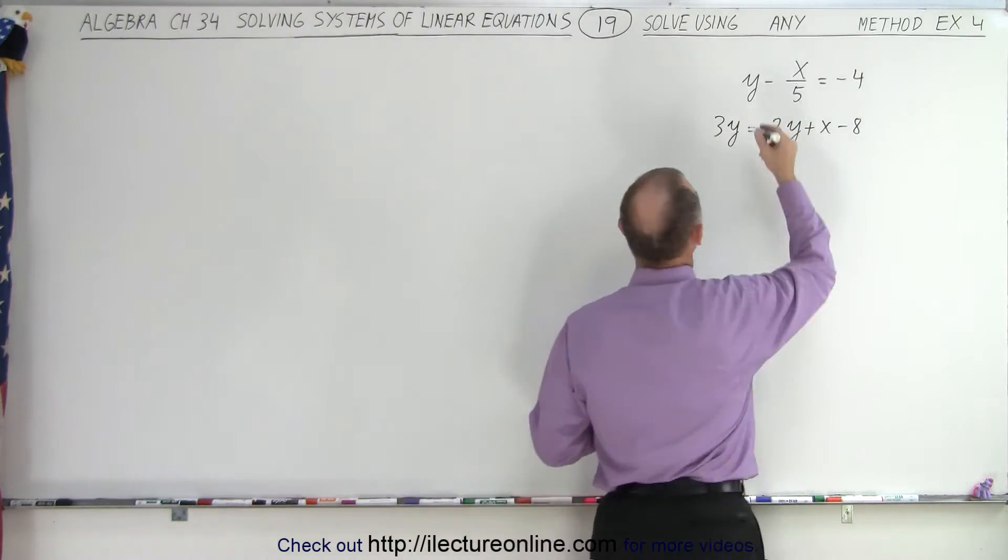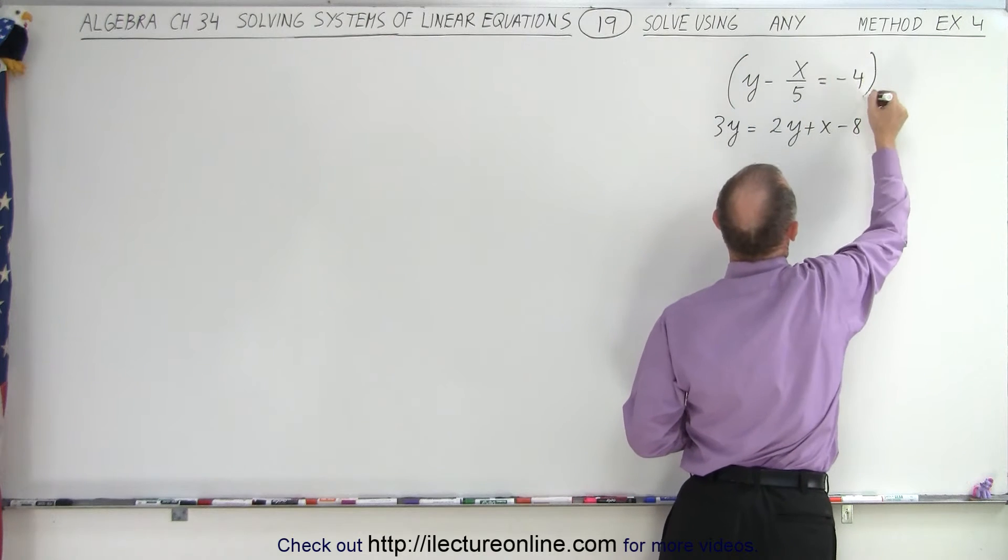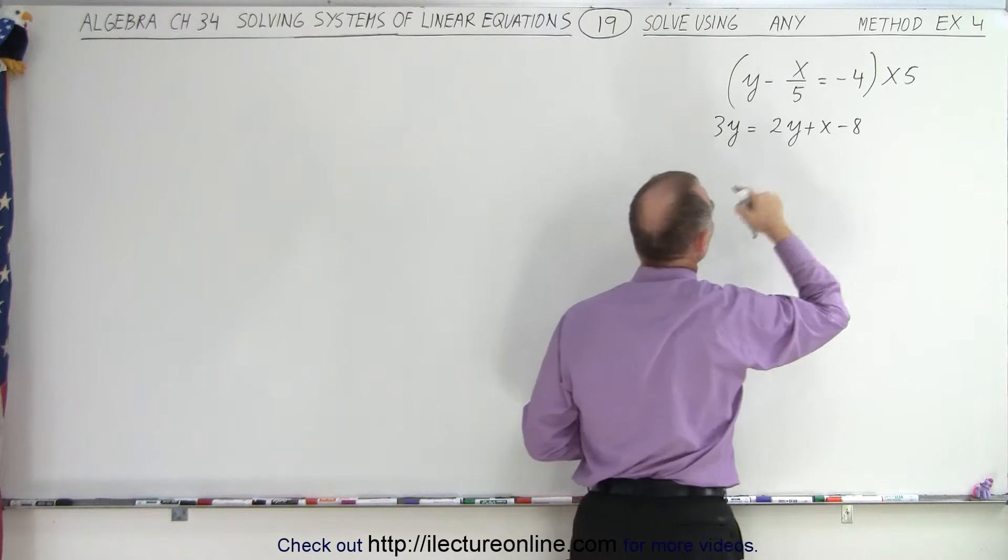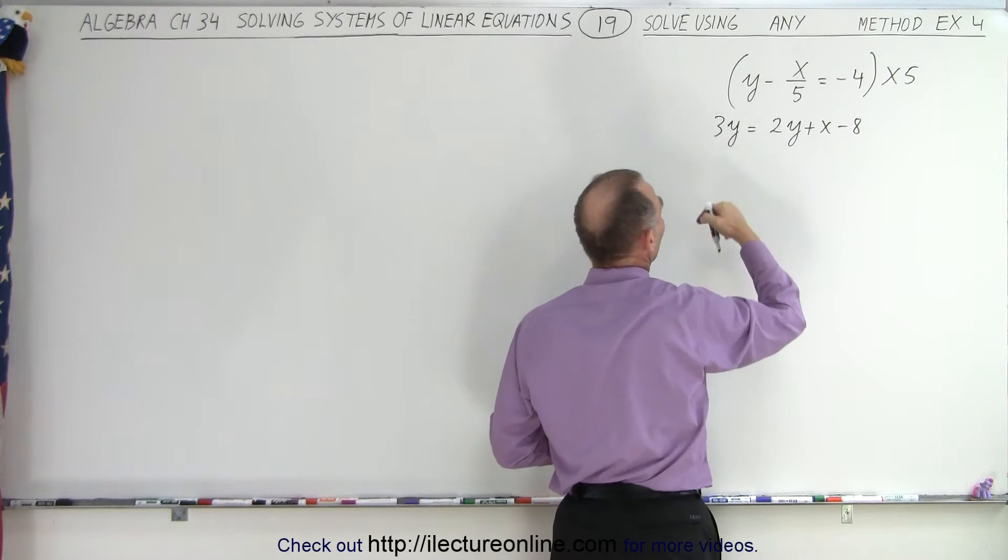So what we're going to do is, in this case, we're going to multiply the top equation by 5, and we're going to multiply both sides by 5, and here we're going to move the 2y to the other side.